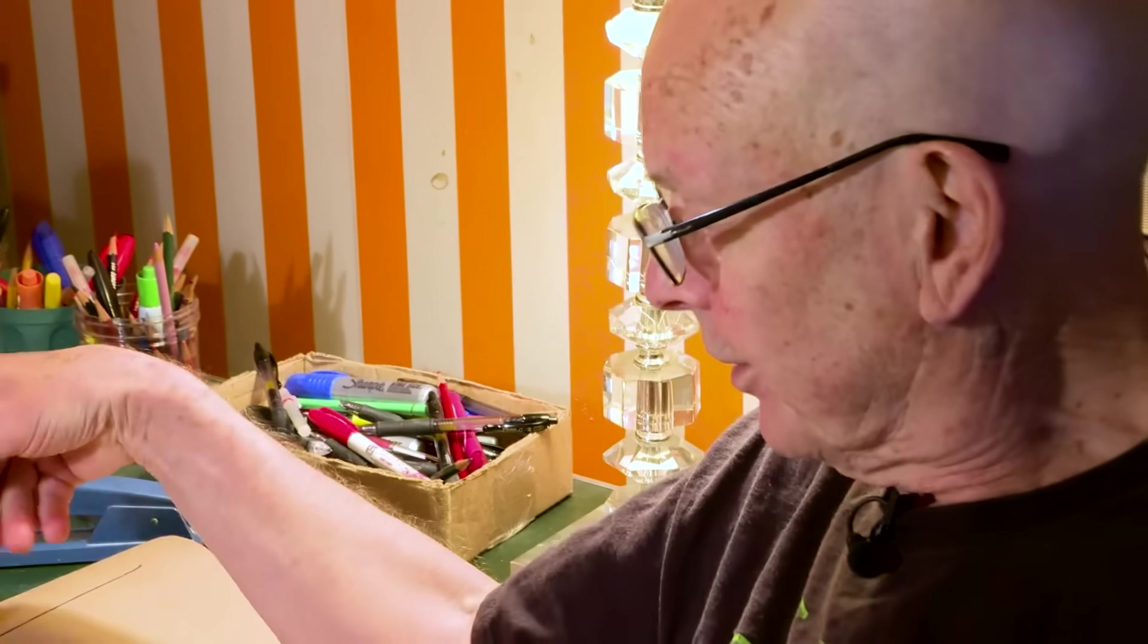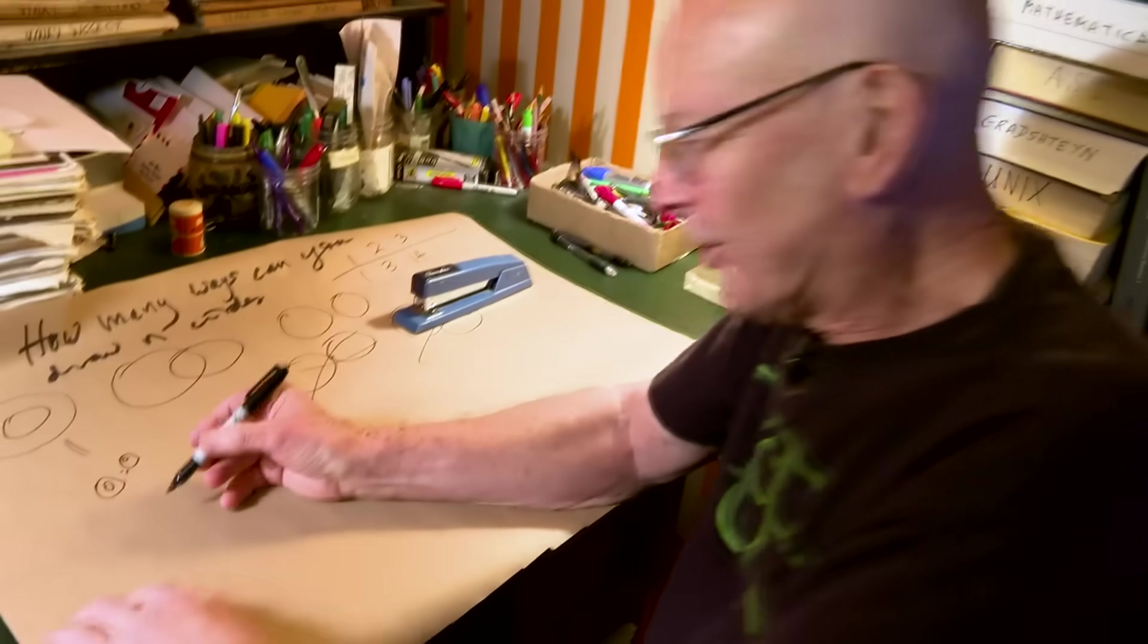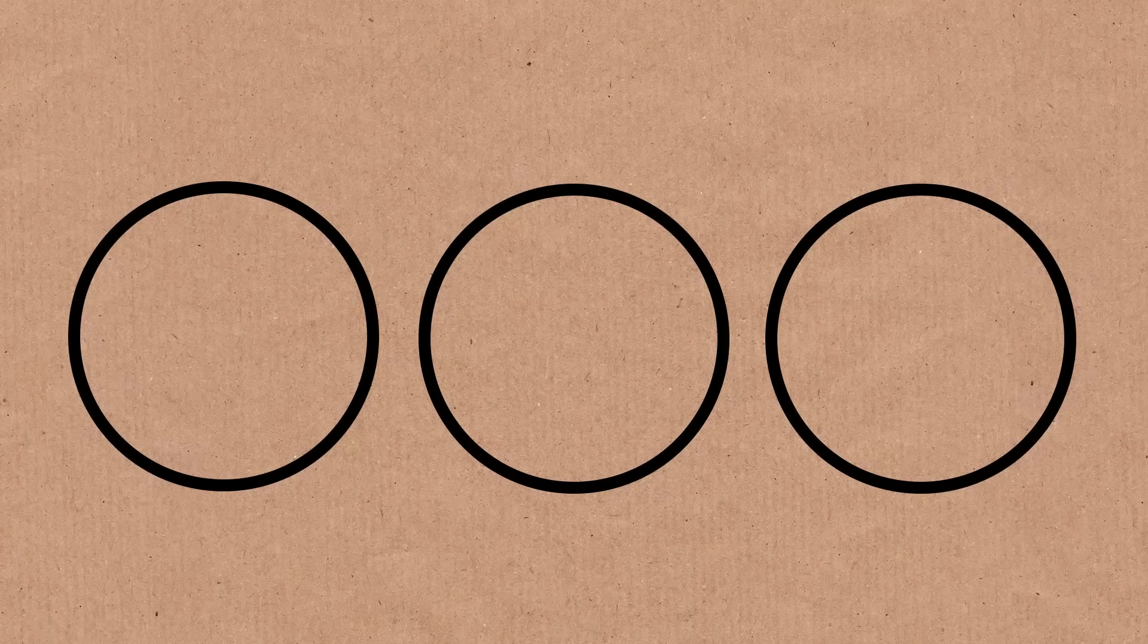We know what the answer is for two circles. There are three. What about three circles? The answer is 14, and here they are. So first of all, obviously, we could do three in a row. Three circles separate from each other.